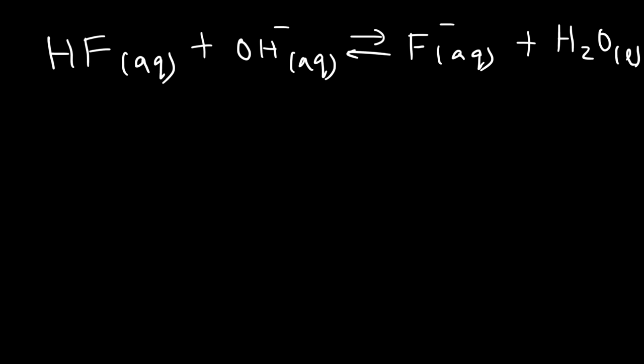So here are the last two examples. Hydrofluoric acid in the aqueous state is going to react with hydroxide. And these two, when combined, will produce fluoride and liquid water. And this reaction is already balanced. So the coefficients are 1 for every species in this equation. So go ahead and write the equilibrium expression.